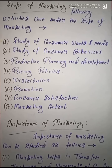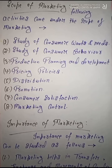Here we have some particular activities counted under the scope of marketing. The very first activity is the study of consumer wants and needs. Whenever we use marketing concepts, the study of consumer wants and needs is made possible. We use one particular tool known as marketing research, and on the basis of this tool, consumers' different types of needs and wants can be properly identified.